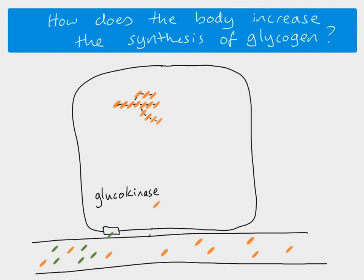Glucose continually enters the cell. Glucokinase adds a phosphate group onto glucose molecules that have already entered, phosphorylating them. Phosphorylated glucose molecules are trapped inside the cell — they cannot leave. This causes a build-up of glucose inside the cell, which the body can then add onto the glycogen molecule.